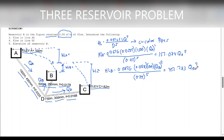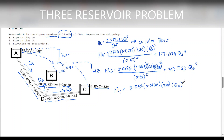For head loss at reservoir C, it is equal to 0.0826 × F (0.0168) × L (750) × QC² over D (0.3 meter) raised to 5. That will be equal to 428.296 QC².